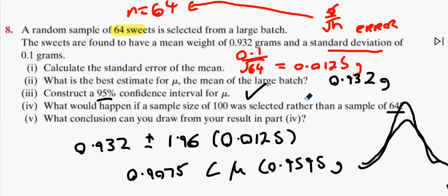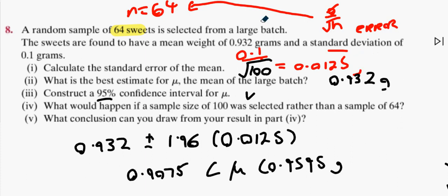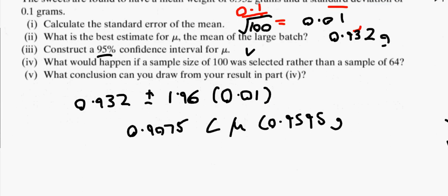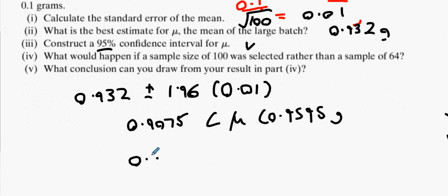We'll construct it again but this time we'll use 100 instead of 64. Divide that by root 100, what do we get? 0.01. So our new standard error is 0.01 instead of 0.0125. We can clearly see that's going to narrow it. So our new confidence interval would be 0.9124 less than mu less than 0.9516.